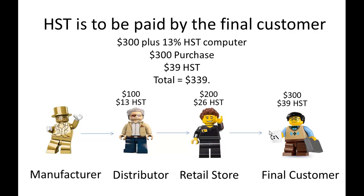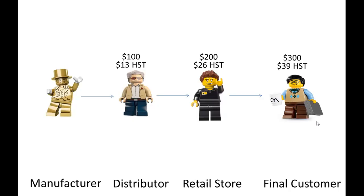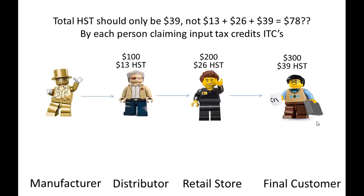So when you look at that along the way, you've got HST of $13, $26, and $39, which adds up to more than the total $39 that should be there. The HST should only be $39, not $13 plus $26 plus $39 for $78.